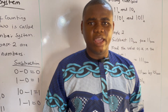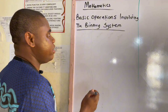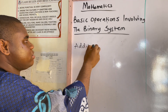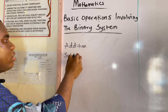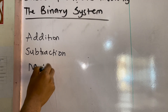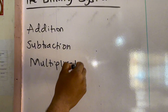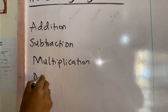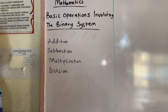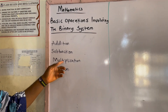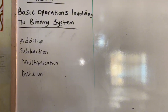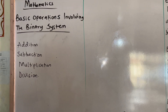All right, now let's move to examples. Today we are going to be dealing with addition of binary numbers, subtraction, multiplication, and division of binary numbers. Our four examples today will explain addition, subtraction, multiplication, and division. Let's go to example one, which will explain addition of binary numbers.